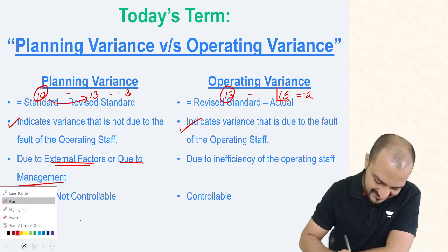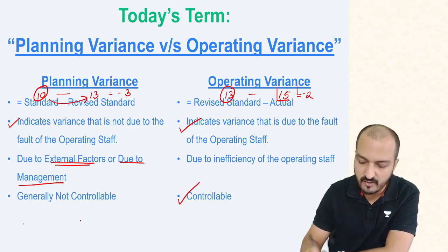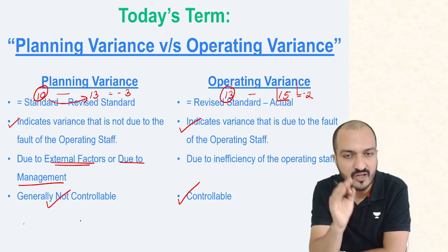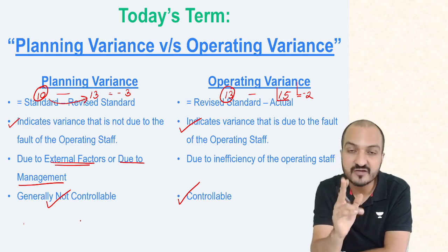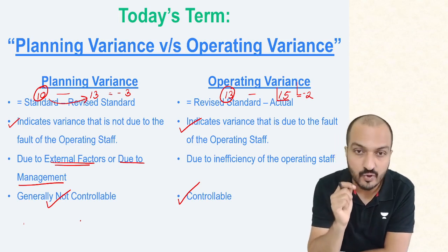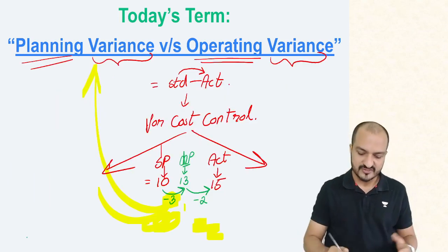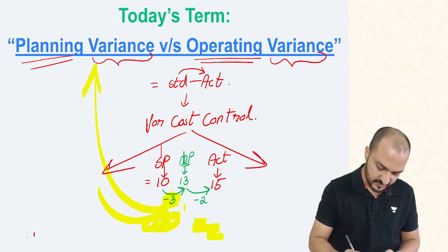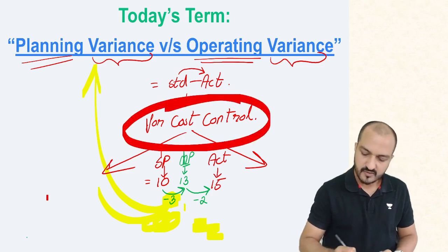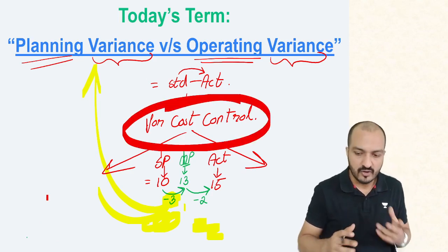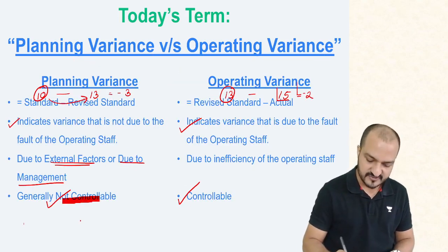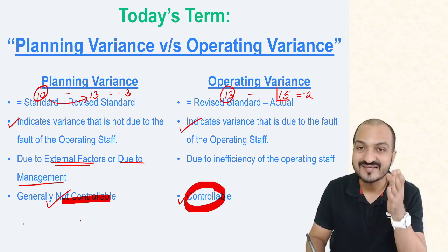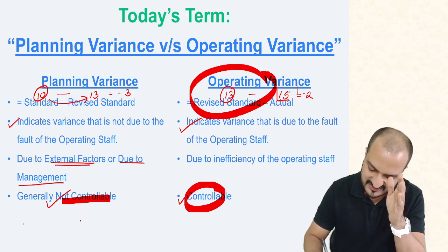Operating variances are generally considered controllable — controllable by the operating staff. Planning variances are generally not controllable, at least not by the operating staff. This distinction is very important because the purpose of standard costing is cost control. Since you cannot control the planning variance, you focus on controlling only the operating variance. It is necessary to separate operating variance because that is what you will actually be able to control.